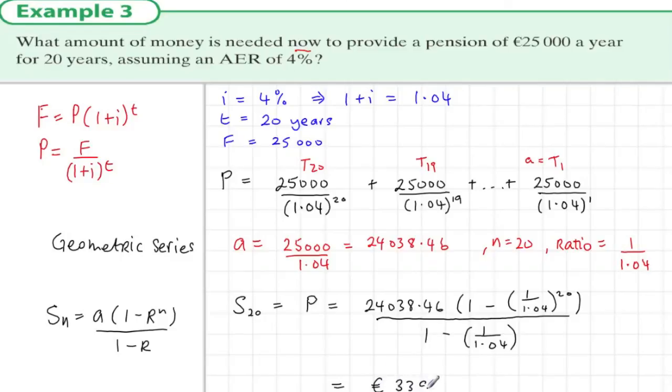And when we do that, we see the answer is €339,758.16. As you see, this is less than 20 times €25,000, which would be €400,000.